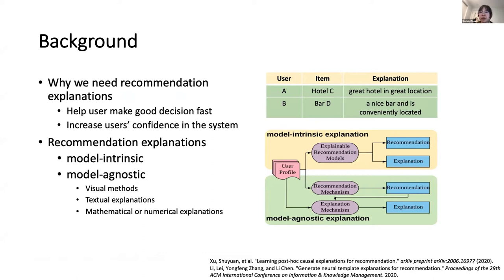There are two major directions of providing explanations. Images in the bottom show the two working mechanisms. First is model-intrinsic. We could design models with transparent inner working mechanisms, like linear regression and decision trees. These models provide recommendations and explanation at the same time. The other is model-agnostic, which provides post-hoc explanations after the model makes recommendations. There are normally three types of explanations. In this paper, we focus on textual explanations.